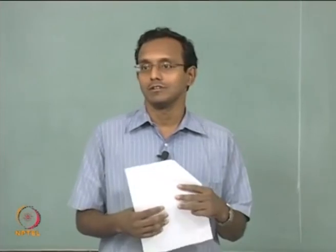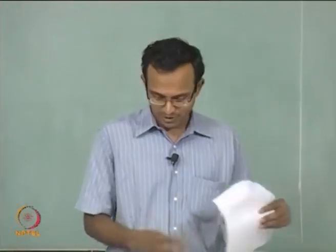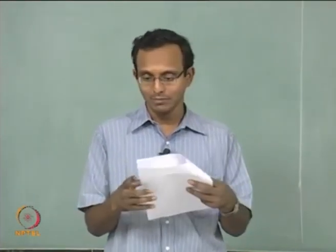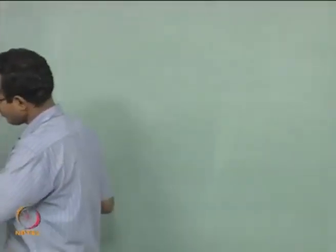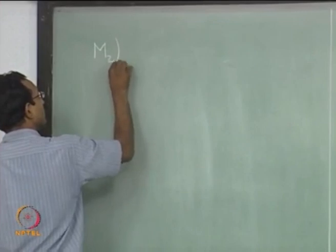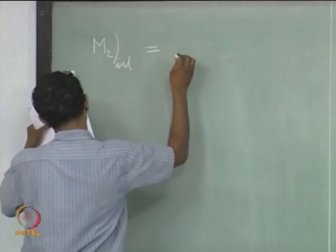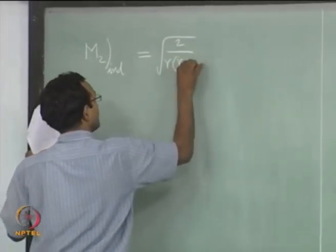Hello everyone, welcome back. We stopped at a point where we were trying to find the Mach number of the flow behind a moving shock wave. We already derived the expression for it and said it can go anywhere between 0 to some high value, depending on gamma, asymptoting to a saturation value. The maximum value is given by the square root of 2 divided by gamma times (gamma minus 1). I'll write that on the board as M2 induced by the shock.